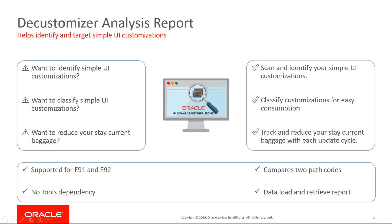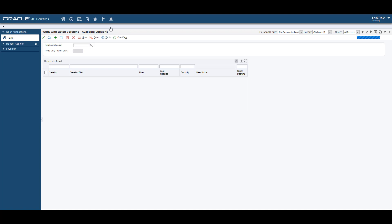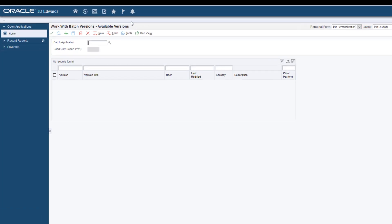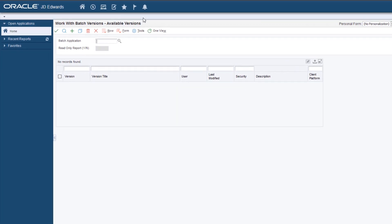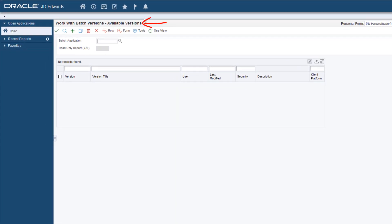The Decustomizer Analysis Report scans your Enterprise One applications across two pathcodes to identify the customizations. For example, you might want to compare the production pathcode and the pristine pathcode. The report stores the identified customization information in the Enterprise One table, and the customization information is published using the batch reports.